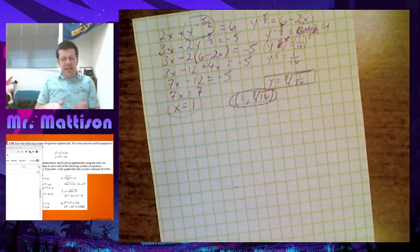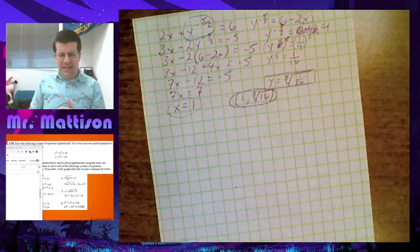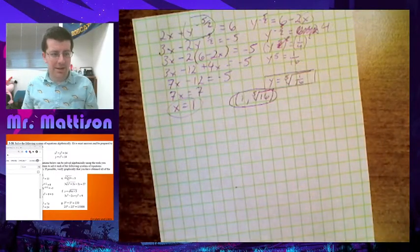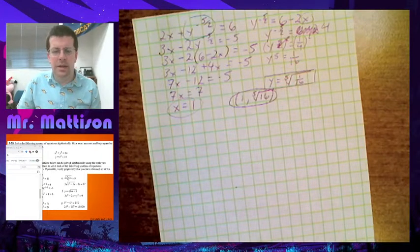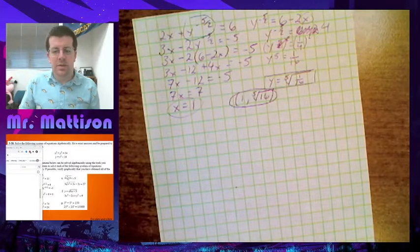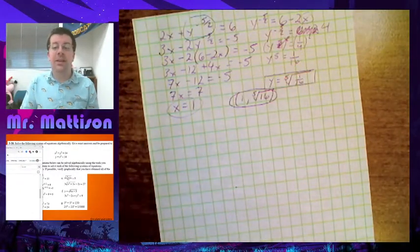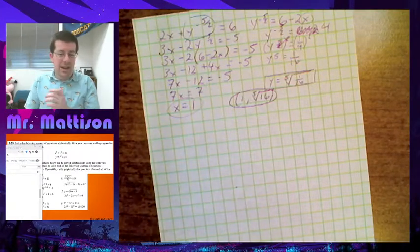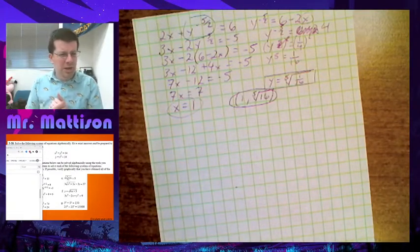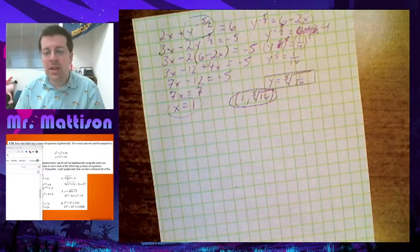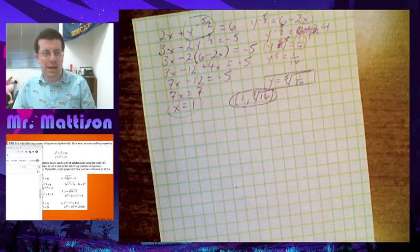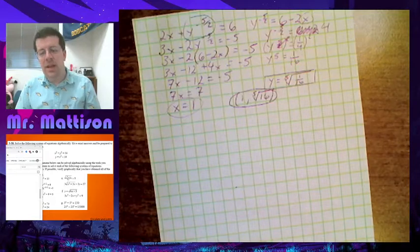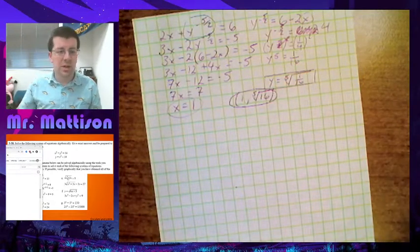On C, you should get no solution — that one just doesn't end up working. On D, we end up getting three different answers: (7, 5), (7, −5), (−7, 5), and (−7, −5). For F, the answer is (2, 3) — the reason x = −2 doesn't work is because it's an extraneous solution. And on G, you should get (3, 2).